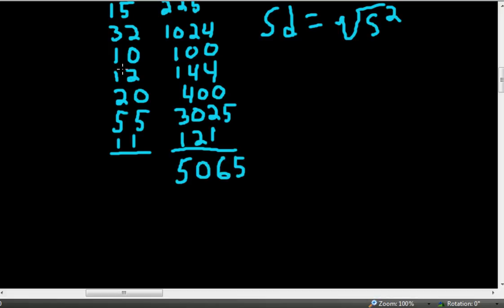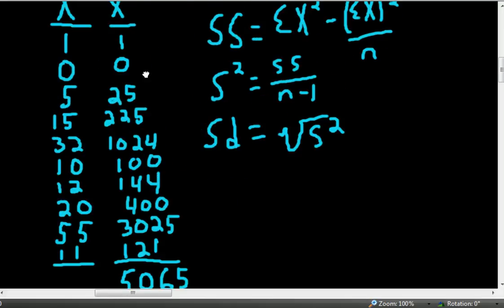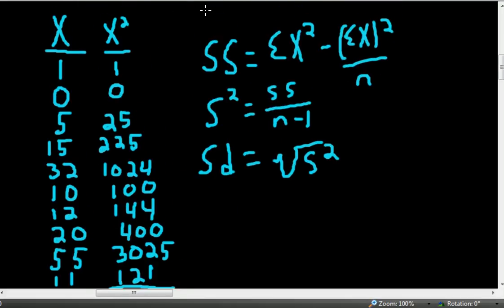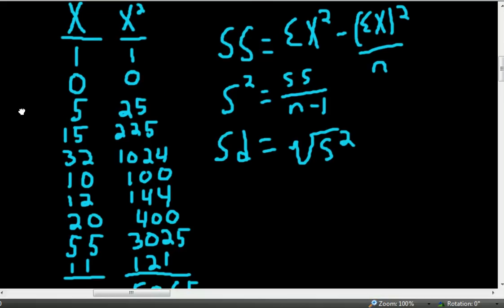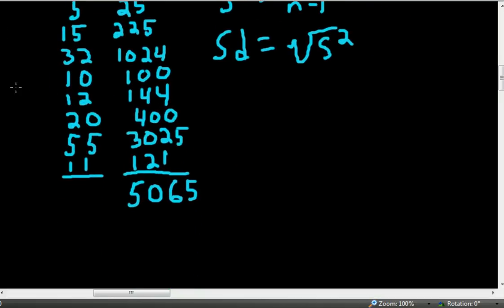Now we have the left-hand side of the equation, and now we need to compute the right-hand side of the equation, which in the numerator says take the sum of x and then square the sum of x. So to get the sum of x, we simply add up all the scores for x. Sum of x here equals 161.